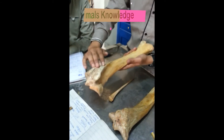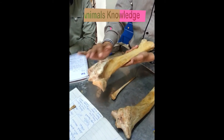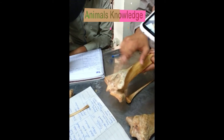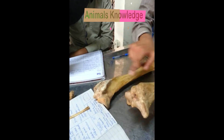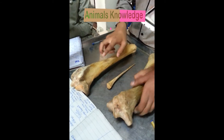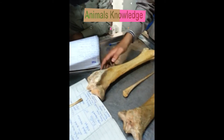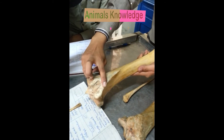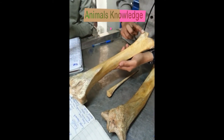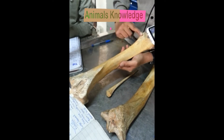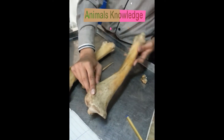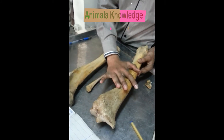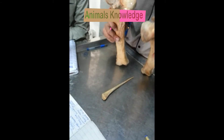This is the cranial side, which has the tibial tuberosity. This is the tibial groove, which is present in horse but not in ox. This is the tibial crest. In horse, the tibial crest is at the distal end, but in ox the tibial crest is in the middle of the shaft.